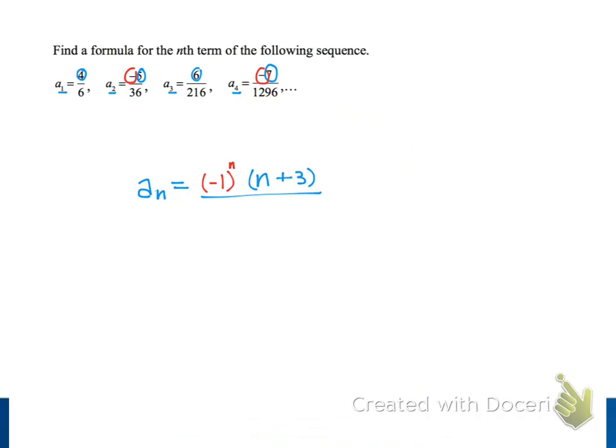If we raise negative 1 to the nth power, then we would get a positive result whenever the exponent is even. But we want to get a negative result when n is even. So we will add 1 to the exponent. So when the index n is even, our exponent, n + 1, will be odd, and we will get negative 1 raised to an odd power, which is negative 1, and that's exactly what we want.